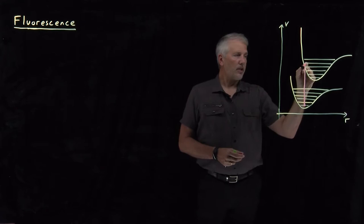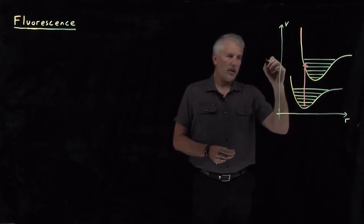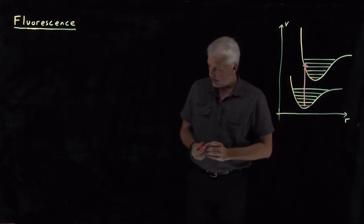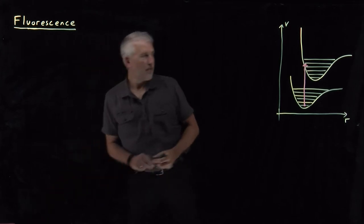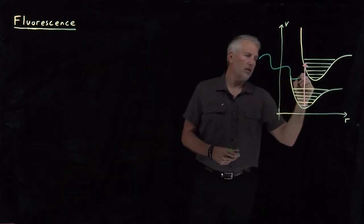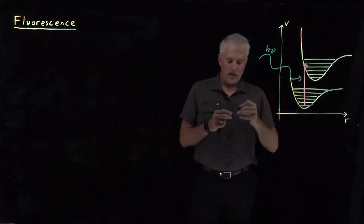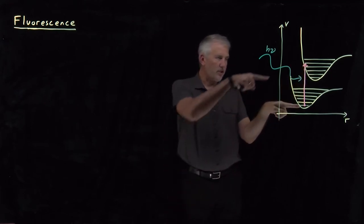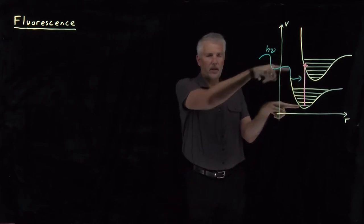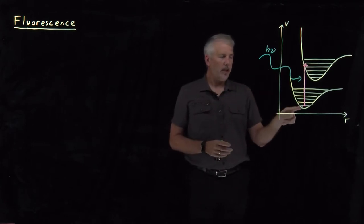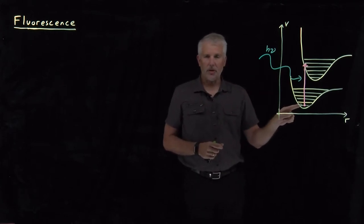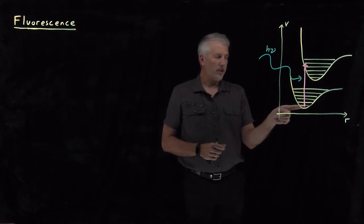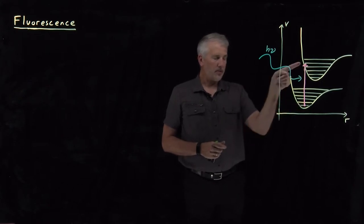So let's say that we shine light on this molecule of the correct frequency to excite this particular transition. The difference in energy between these two states is the same as the energy of the photon, and that's an allowable transition according to the Franck-Condon Principle. So we've excited the molecule from this state up to this state.